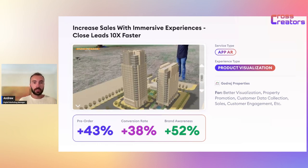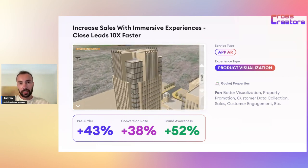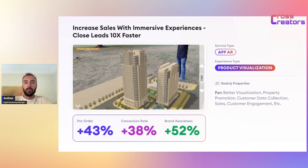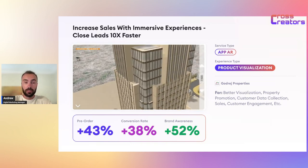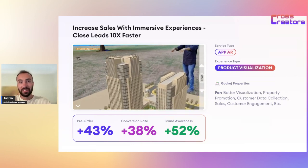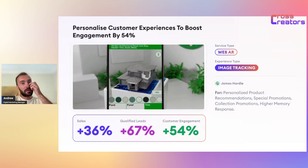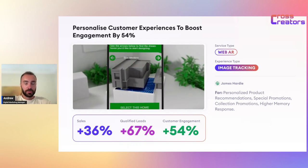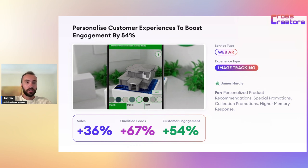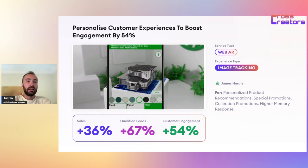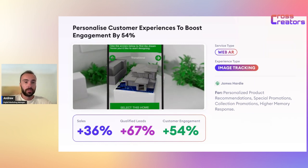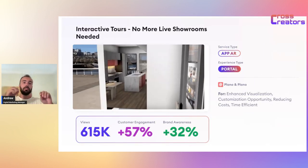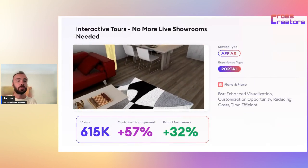You can show a scaled-down object in the real world — real estate product visualization. For example, an architect, instead of showing it on paper or a computer screen, can let the client see it in the real world and take a picture next to it. Then there's the personalized experience to boost engagement — the customer can choose the type of house, choose the colors, how it will look, and you can build that house into the customer's environment.